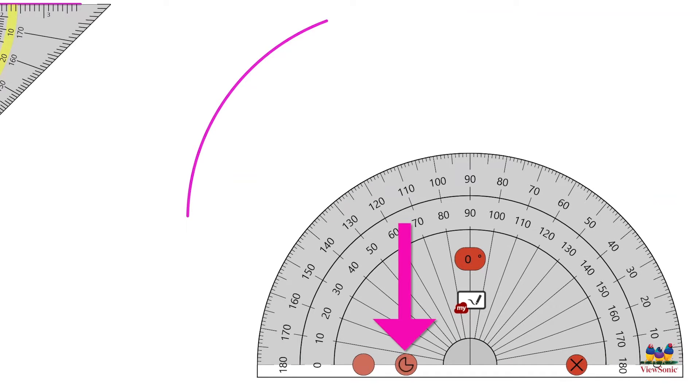But if you want it filled in and you want to actually show the angle as well, toggle this button down here at the bottom of the protractor. Now when you draw along and let go, it fills in the arc.